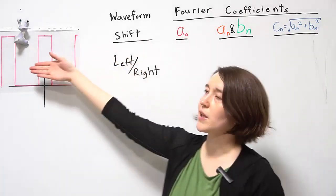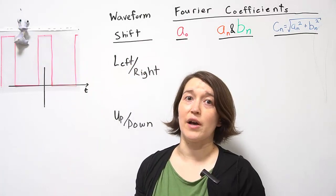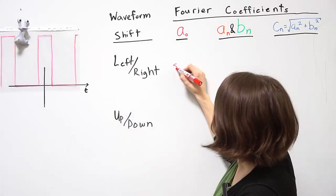a0 is a DC component. Shifting left to right doesn't change the average value, so that's actually going to be the same.